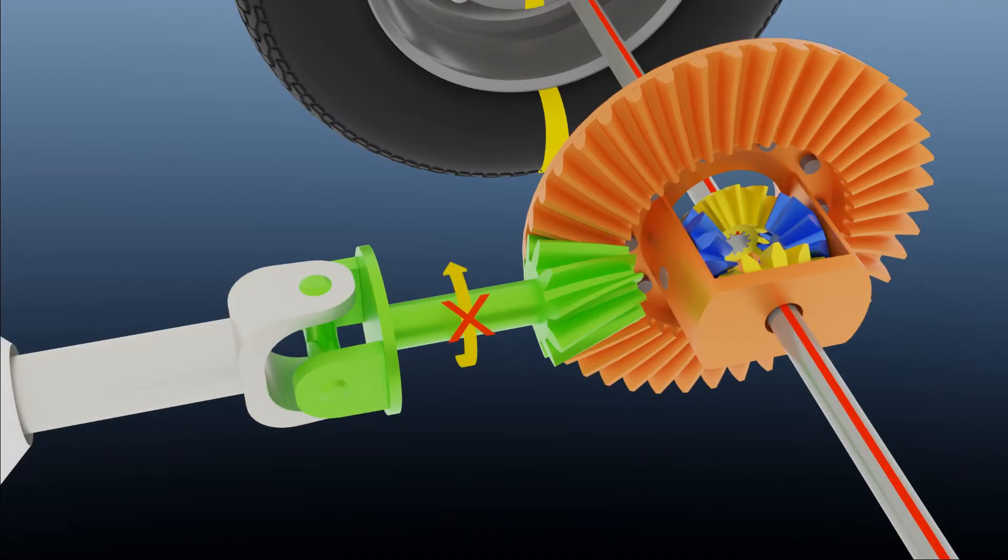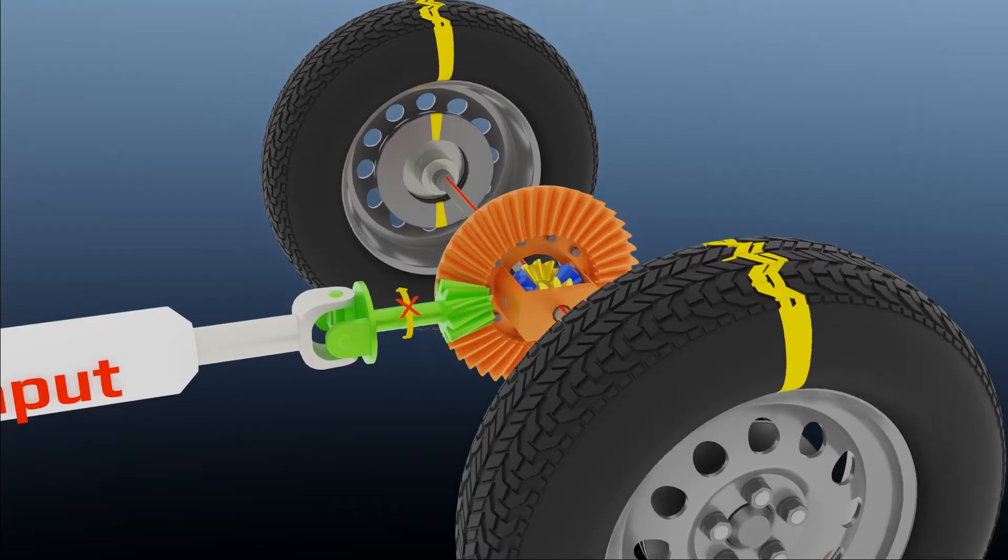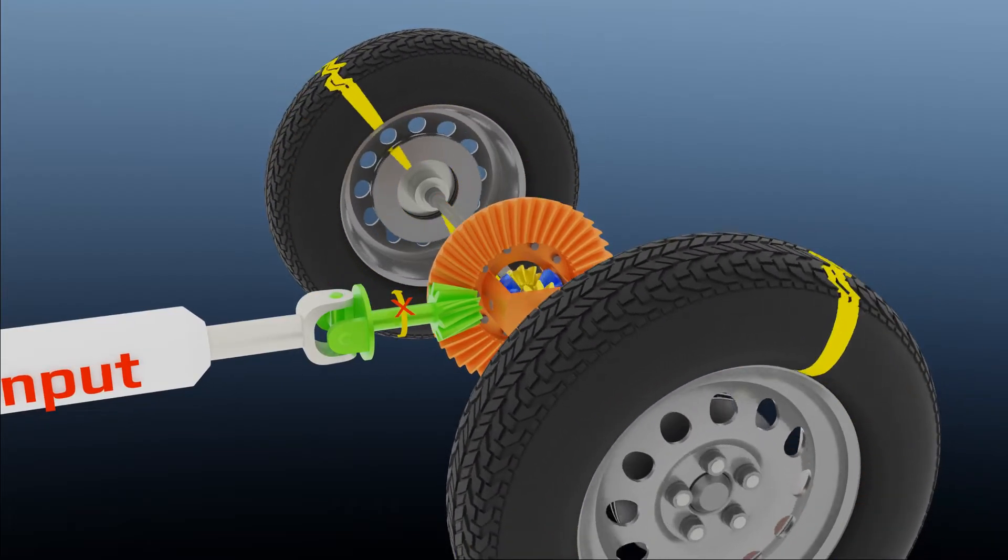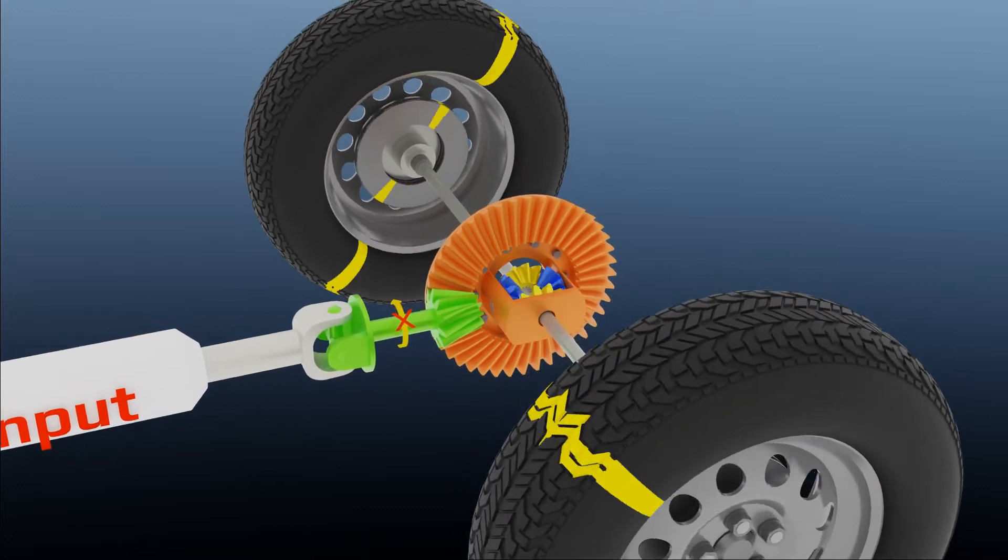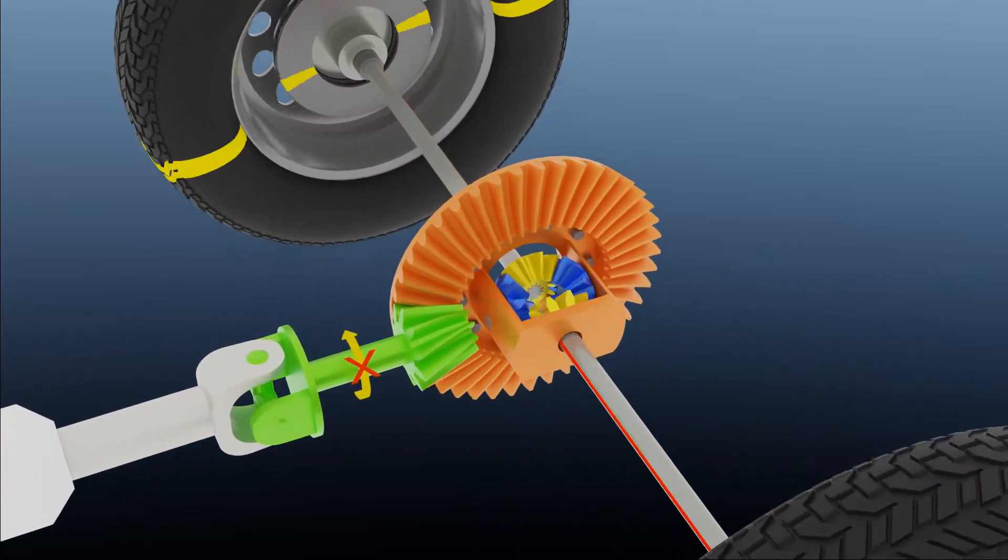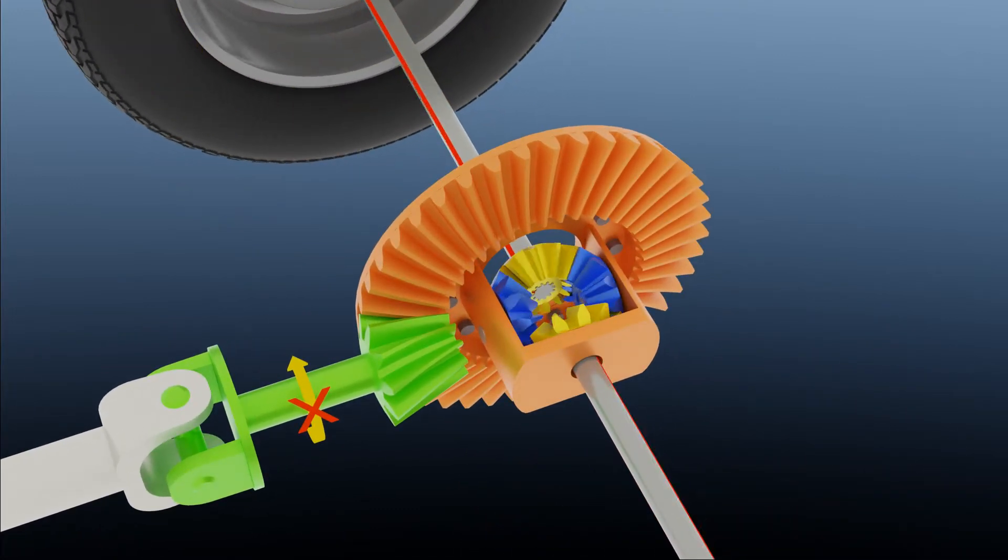In backward direction, it happens only if this wheel is free from ground contact because it is an open type differential. Let's see how all gears are linked together. Here, the propeller shaft drives the pinion gear.